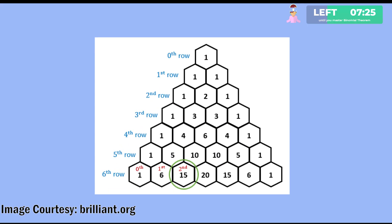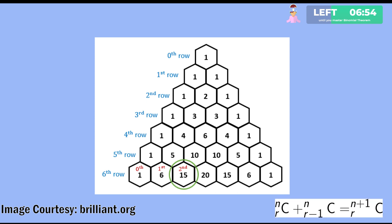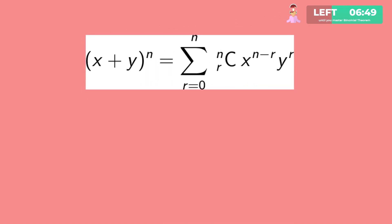Pascal's triangle is a very important tool used to determine coefficients of binomial expansion. Adding up two terms in one row gives a term in the next row; the values of n are given on the left-hand side. For n equals 2: 2C0 is 1, 2C1 is 2, and 2C2 is 1. The construction of this triangle justifies why nCr plus nC(r minus 1) equals (n+1)Cr.